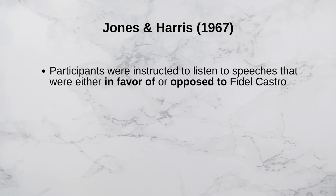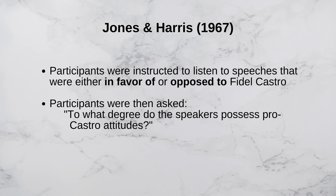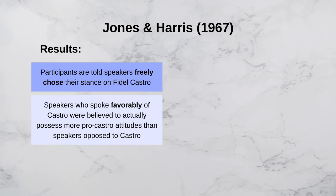The earliest study that showed the effects of the fundamental attribution error was actually conducted a decade prior to Ross coining the term. In this 1967 study, Jones and Harris invited their participants to the lab where they were instructed to listen to speeches made by people that took a stance either in favor of or opposed to Fidel Castro. Based on the speeches, the participants were asked to infer the extent to which the speakers possess pro-Castro attitudes. The results showed that when participants were told that the speakers freely chose their stance on Fidel Castro, participants on average rated the pro-Castro speakers as actually having more positive attitudes towards Castro compared to the anti-Castro speakers.